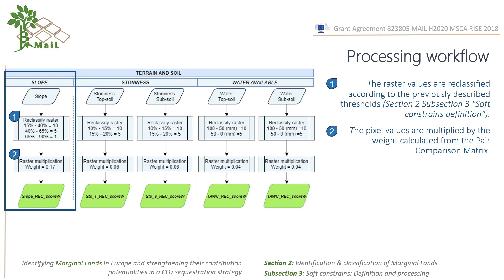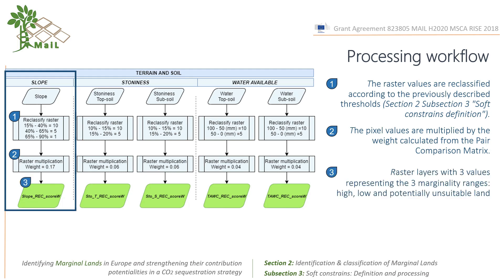Afterward, the pixel values are multiplied by the weight calculated from the PCA. And finally, we obtain a raster layer with three values representing the three marginality ranges: high, low, and potentially unsustainable land.